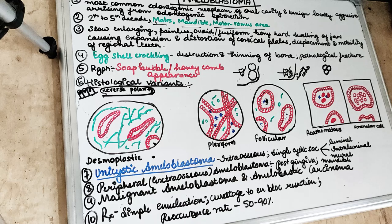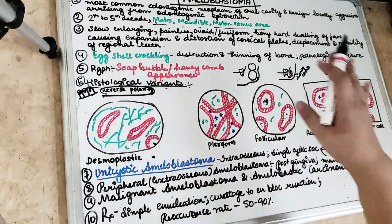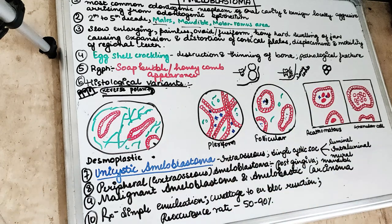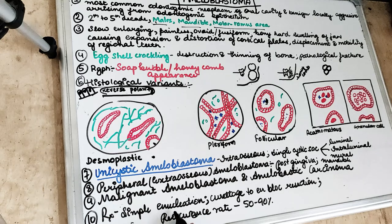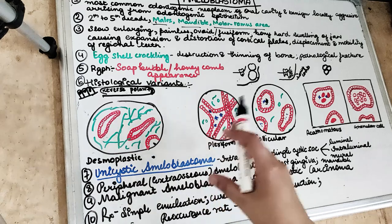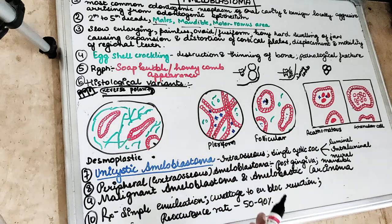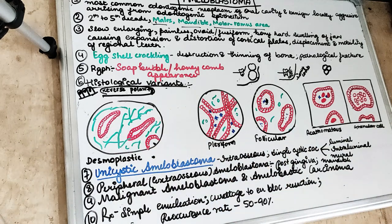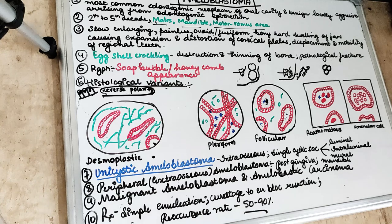For treatment of the multilocular or conventional type, we can use simple enucleation, curettage, or en-bloc resection. Complete removal is often required because the recurrence rate is high — 50 to 90%.